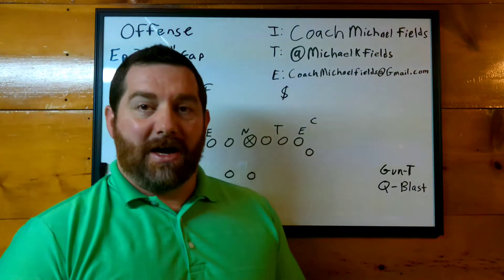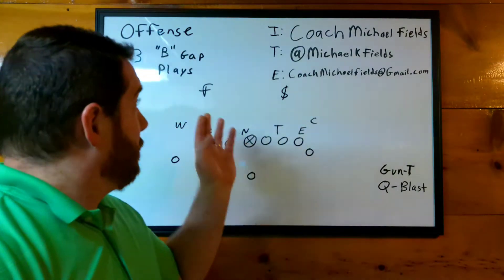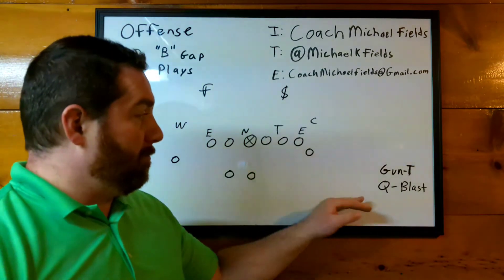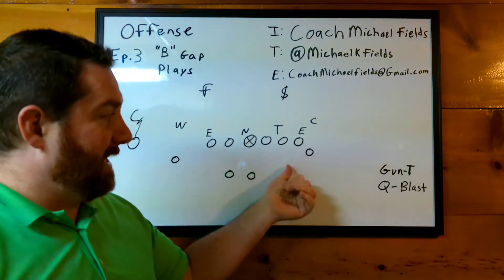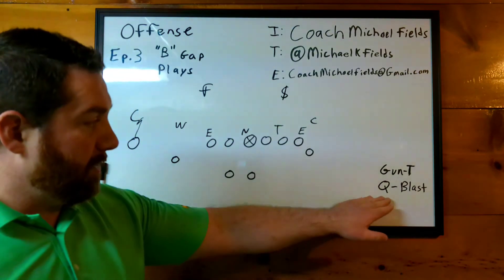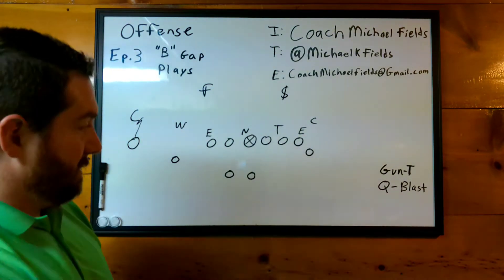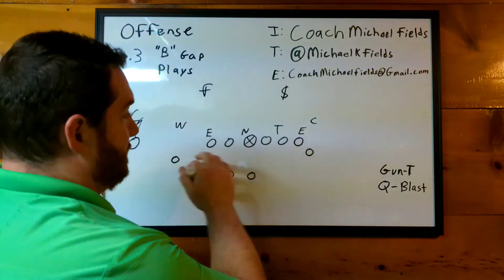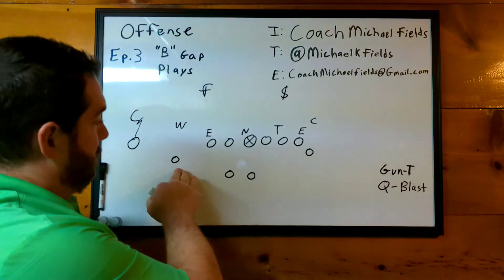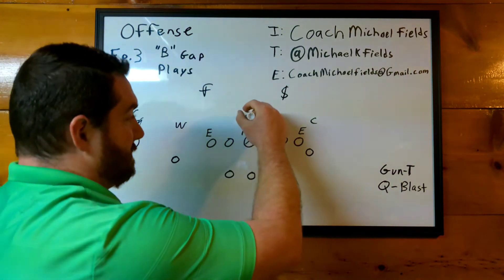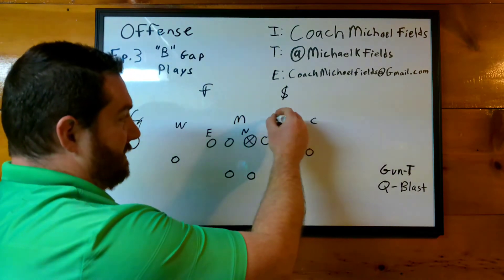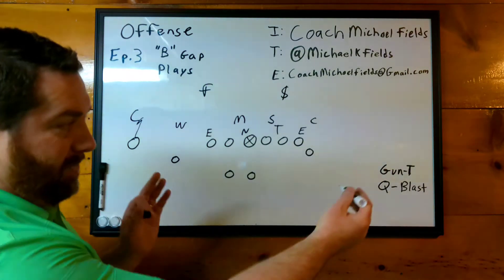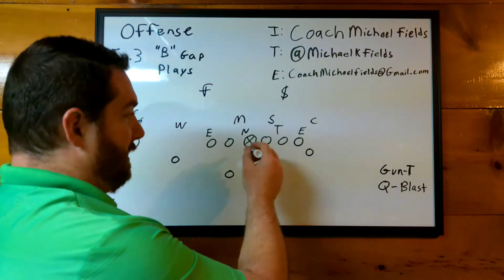We've got one last version of our blast. We're attacking gaps, offensive series, B gap — and it's going to look more like a traditional gun-T, shotgun wing-T look. We're going to run what I like to call Q blast. Now we're at single back, offset with our quarterback. With this look, our Will's going to probably get pulled out because we have our slot, so our Mike's more in this area and our Sam's more over here because he's got to cover two gaps. Now we're spreading them out with the gun-T look.